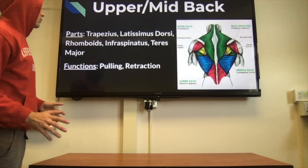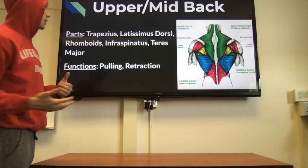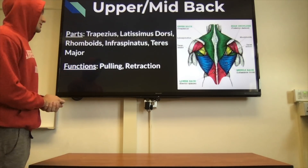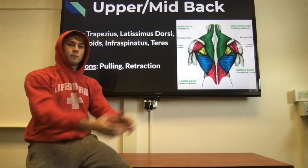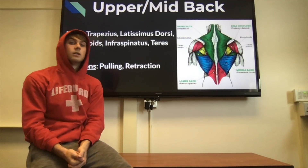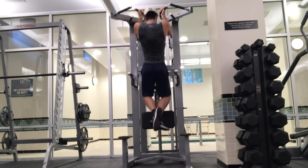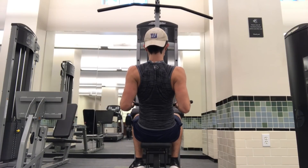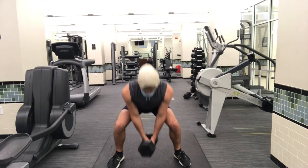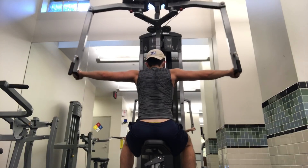The upper and middle back are comprised of many muscles: your trapezius, latissimus dorsi, rhomboids, infraspinitus, and teres major. You don't need to know all of these — just know that the back is responsible for pulling motions and retraction, including deadlifts. To target your upper back you should do pull-ups, chin-ups, lat pull-downs, rows, deadlifts, back retractions, shrugs for the traps, and supermans.